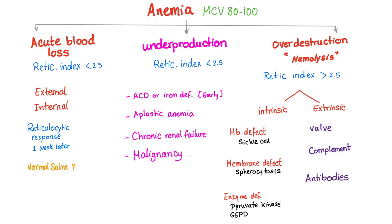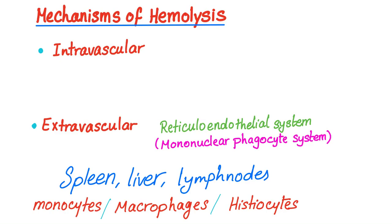Extravascular versus intravascular are the mechanisms. Now to the mechanisms of hemolysis: intravascular means inside the blood vessel; extravascular means inside the spleen — but not the spleen only. All of the reticuloendothelial system organs, also known as the mononuclear phagocyte system, are involved.